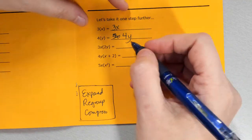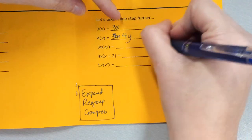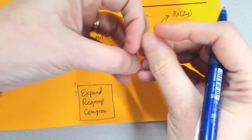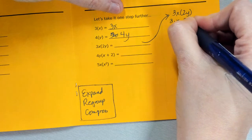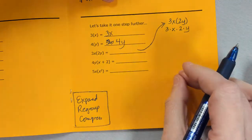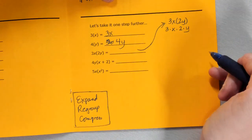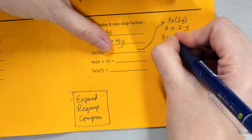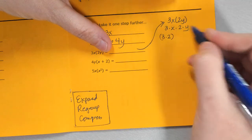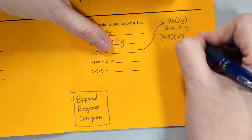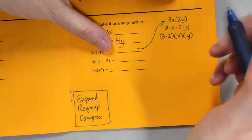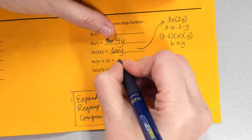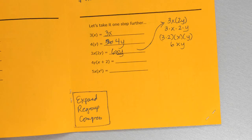Now I regroup — put all the same kinds of things together. When putting together a monomial, we always start with the coefficient. So I have 3 times 2 in my first group, then I list variables in alphabetical order: x and y. Now compress them back together. 3 times 2 is 6, I have an x and a y, so the answer is 6xy. That's my new term type — I have 6xy's.